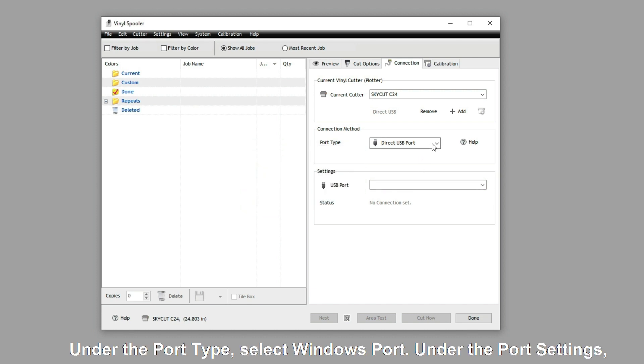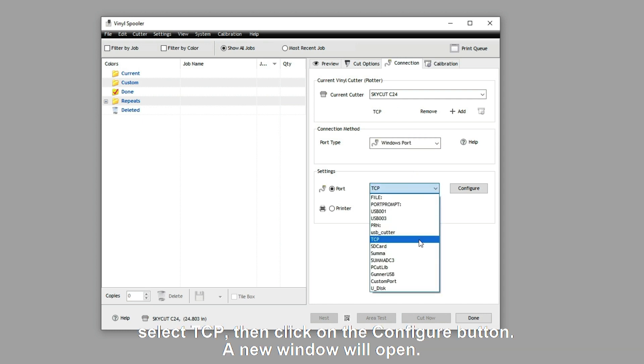Under the Port Type, select Windows Port. Under the Port Settings, select TCP. Then click on the Configure button.